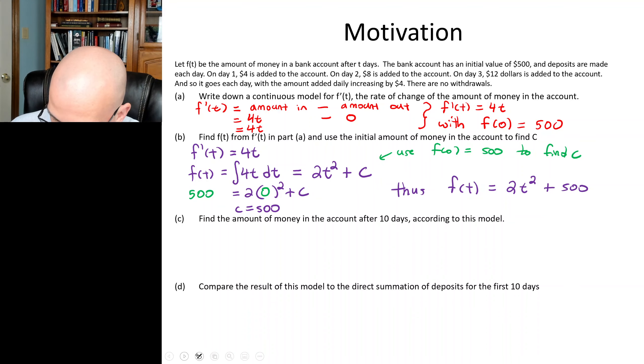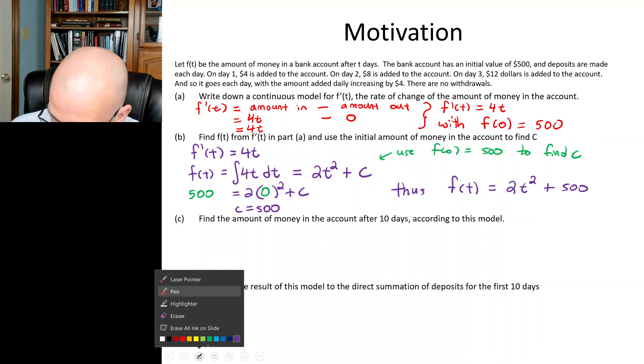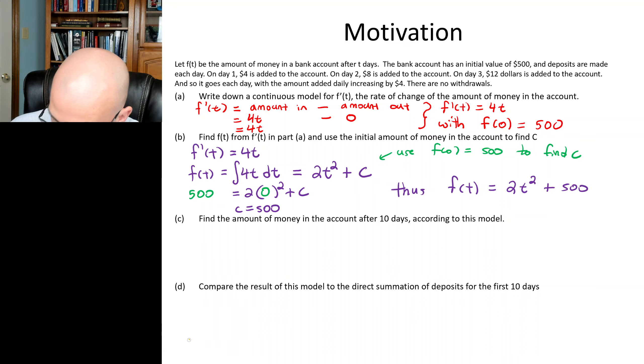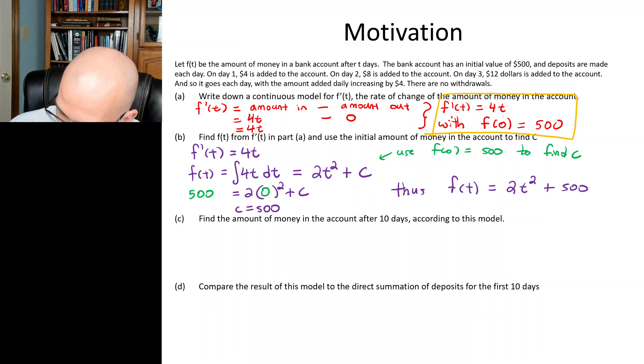Now we're going to use our data. We use f of 0 is equal to 500 to find c. So 500 is equal to 2 times 0 squared plus c, which gives c is equal to 500. Thus f of t is equal to 2t squared plus 500. So that's our answer for Part B.